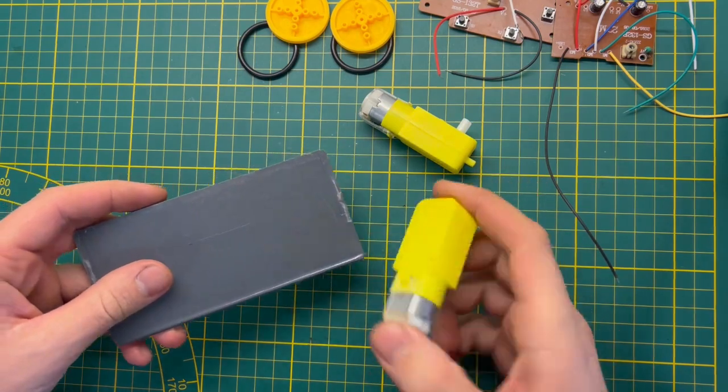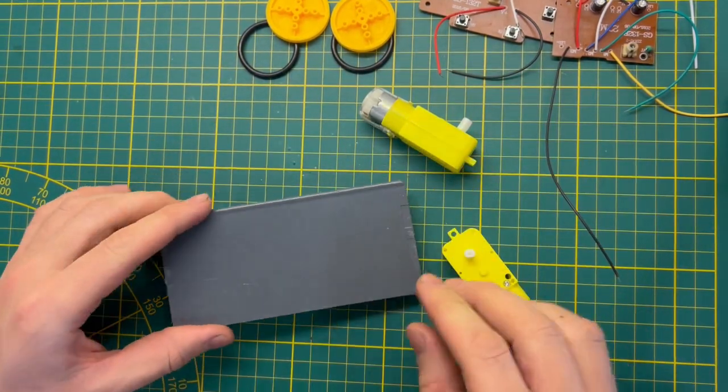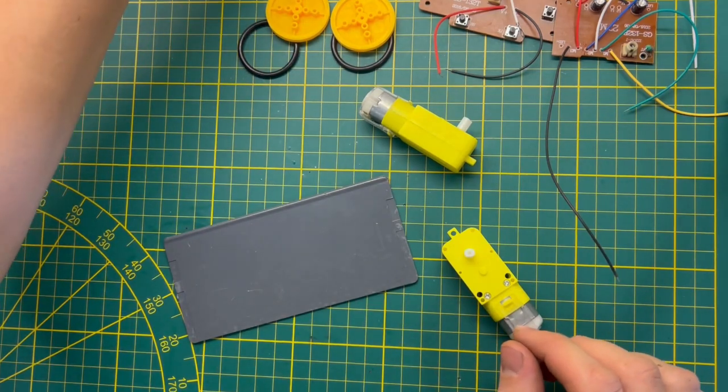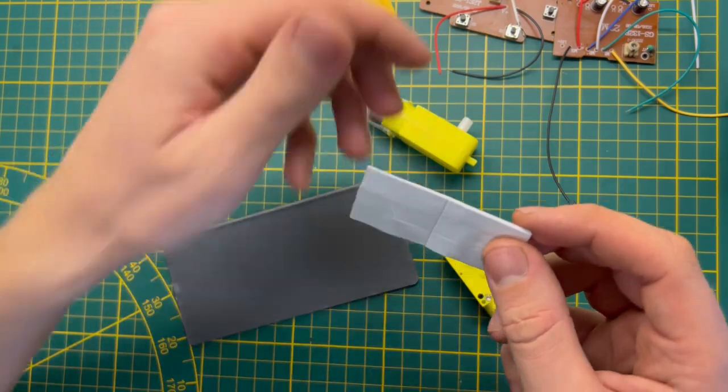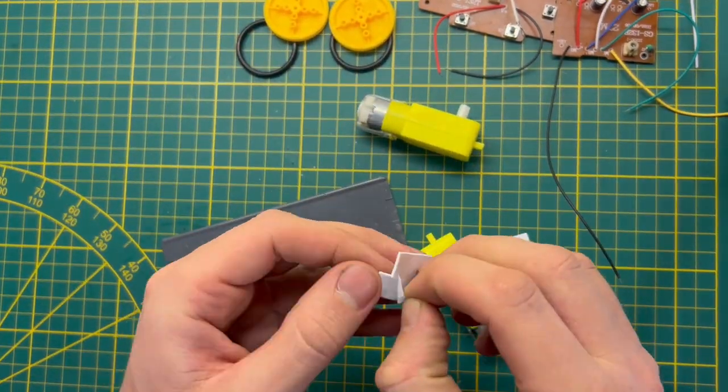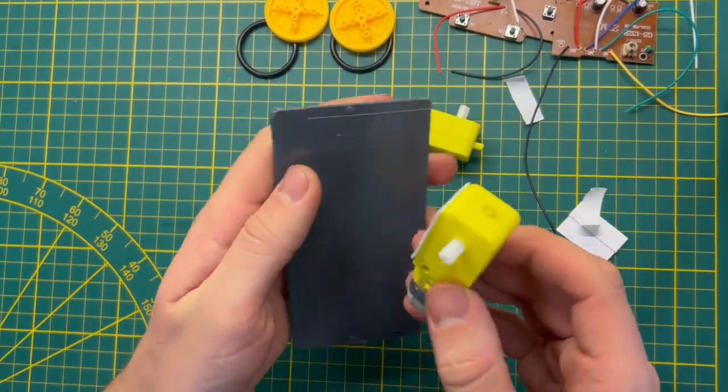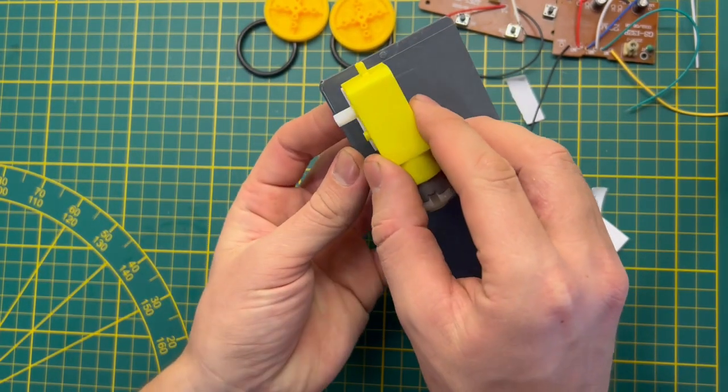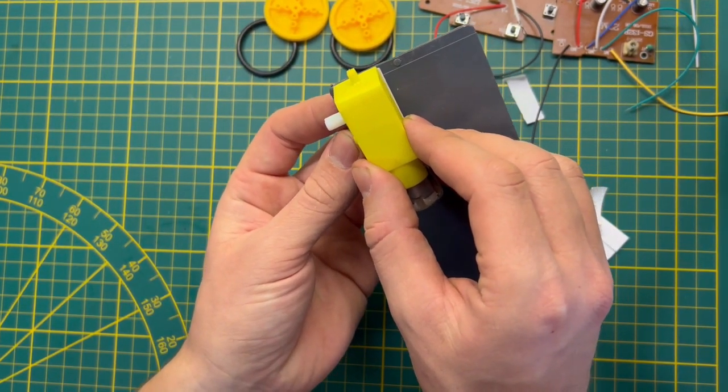First of all, I will install these motors to this base. For this, I'm going to use double-sided tape. Okay, now very important to put it straight.